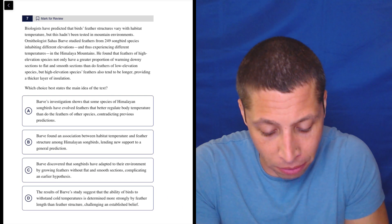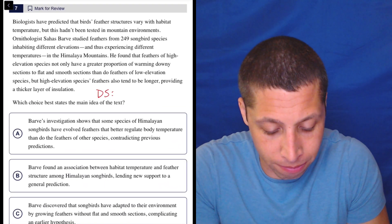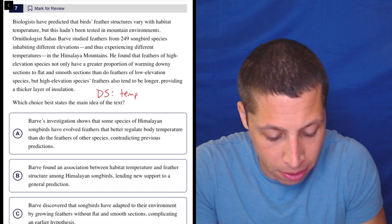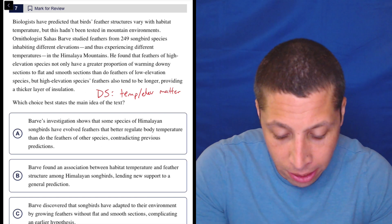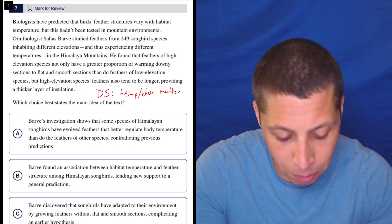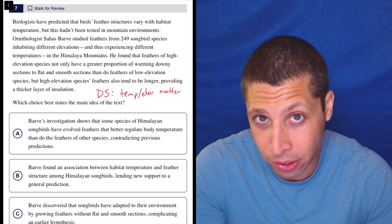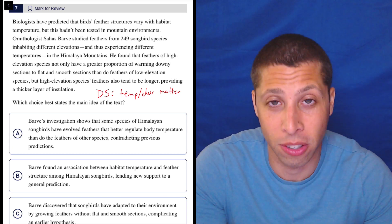For now, all I'm like, my dumb summary for now is just basically like, I guess, temp and elevation matter, right? So the high elevation species have warm things. The high elevation species are also going to be longer. So it matters. I don't really care how it matters. I don't care what the difference is. I just, it matters. Let's look at the choices.